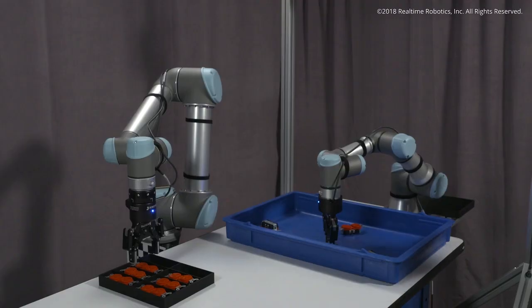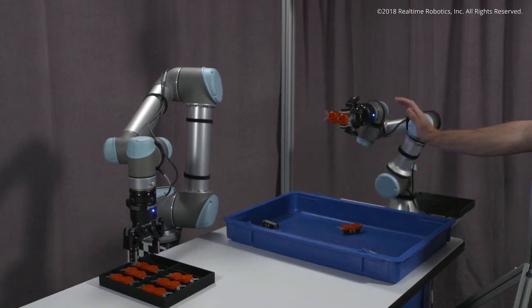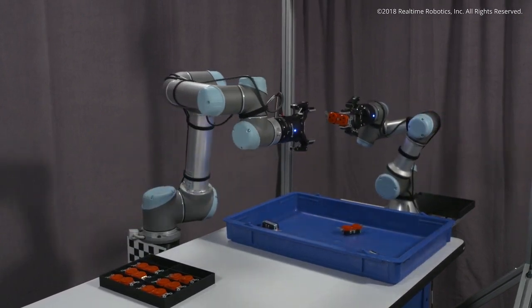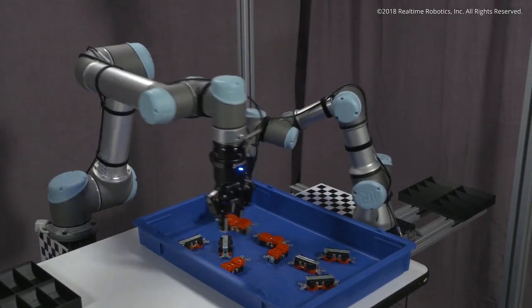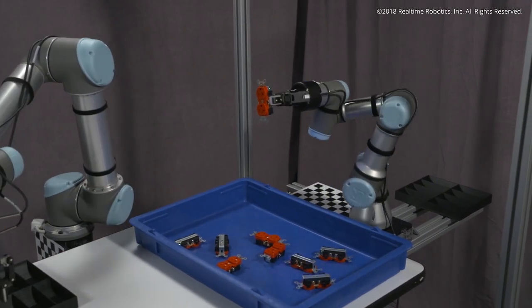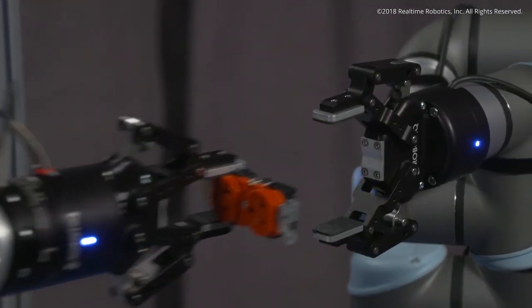Real-time robotics technology enables the use of human-safe automation in applications with significant process variation or dynamic activity within the workspace. The speed of our processor overcomes the limitations preventing the spread of robotics.